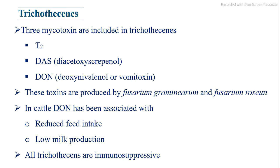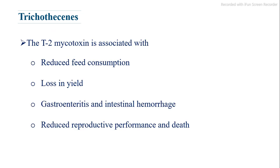Three mycotoxins are included in the trichothecins: T-2, diacetoxyscirpenol (DAS), and deoxynivalenol (DON) or vomitoxin. These toxins are produced by Fusarium graminearum and Fusarium roseum. In cattle, DON has been associated with reduced feed intake and low milk production. All trichothecins are immunosuppressive. T-2 mycotoxin is associated with reduced feed consumption, loss in yield, gastroenteritis and intestinal hemorrhage, reduced reproductive performance, and death.